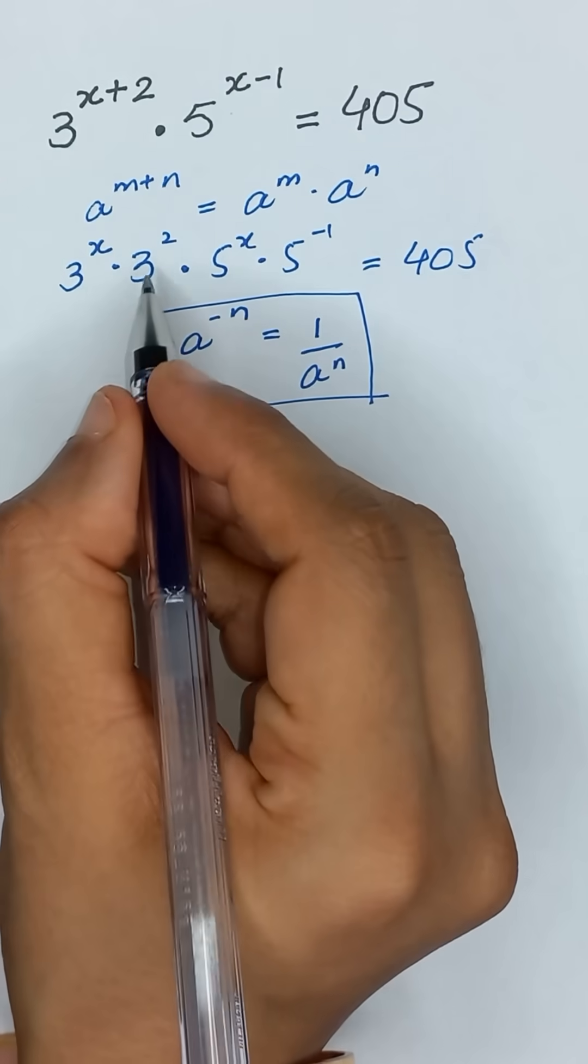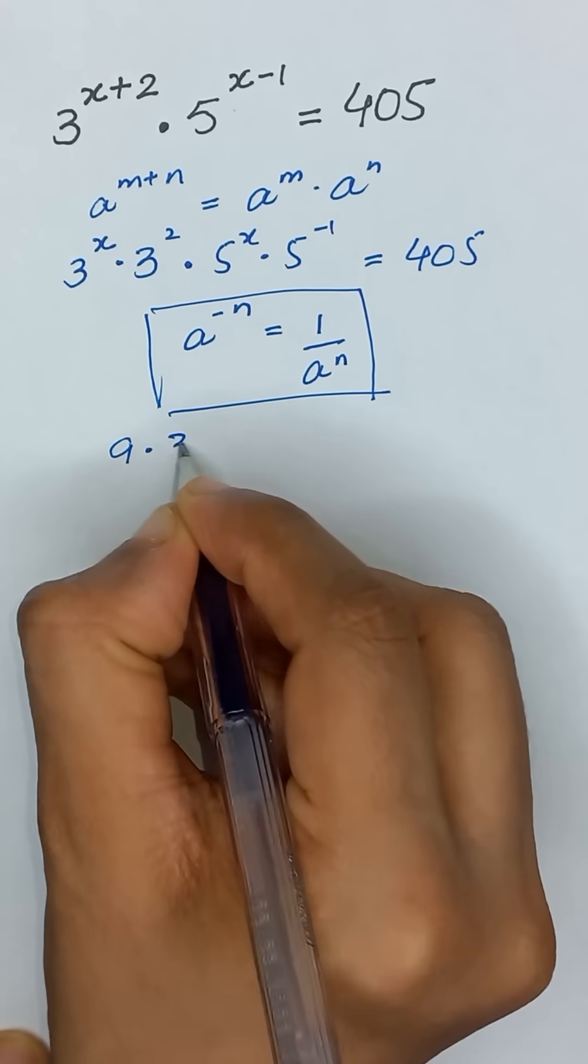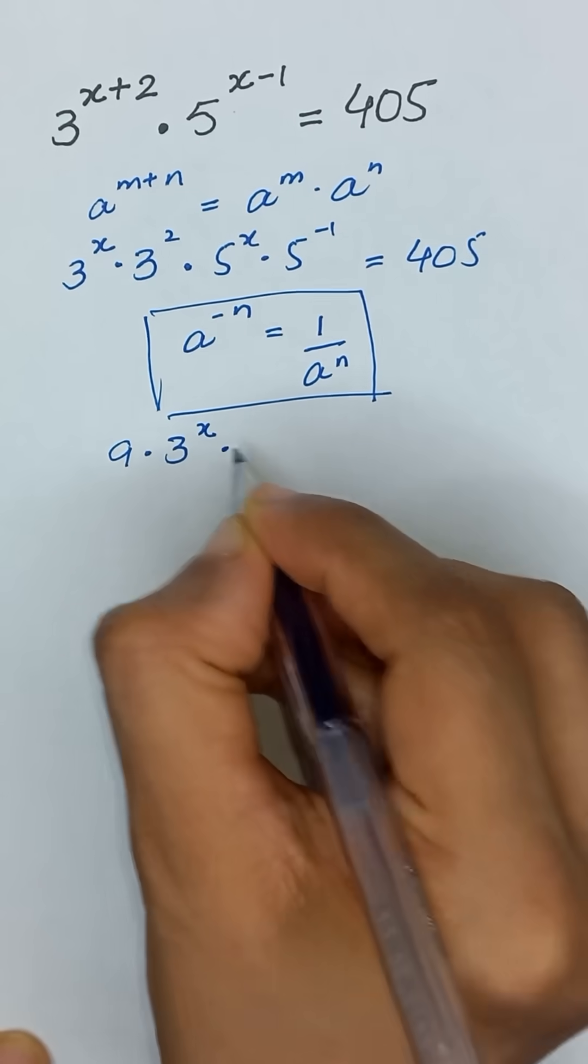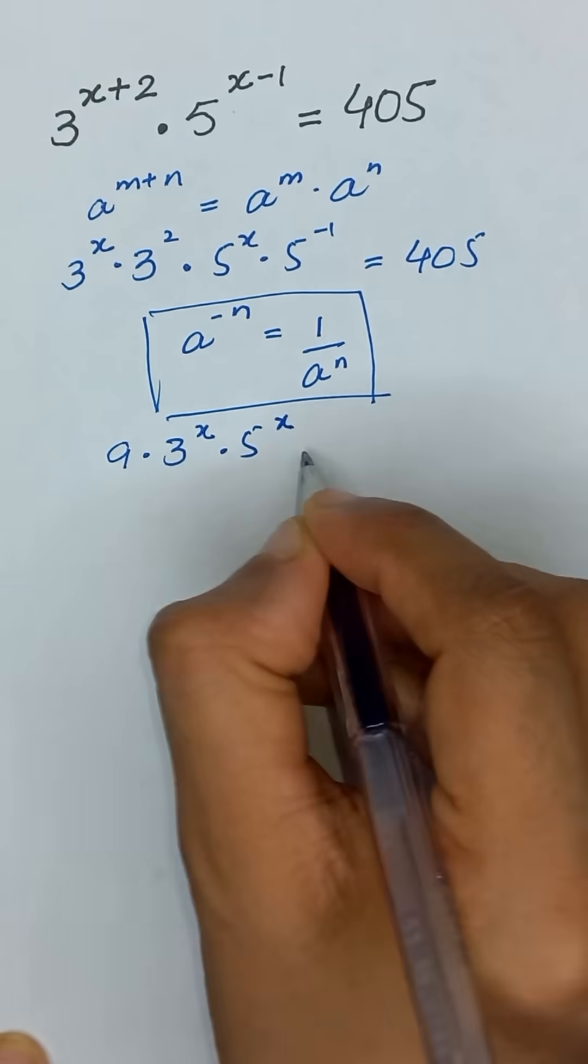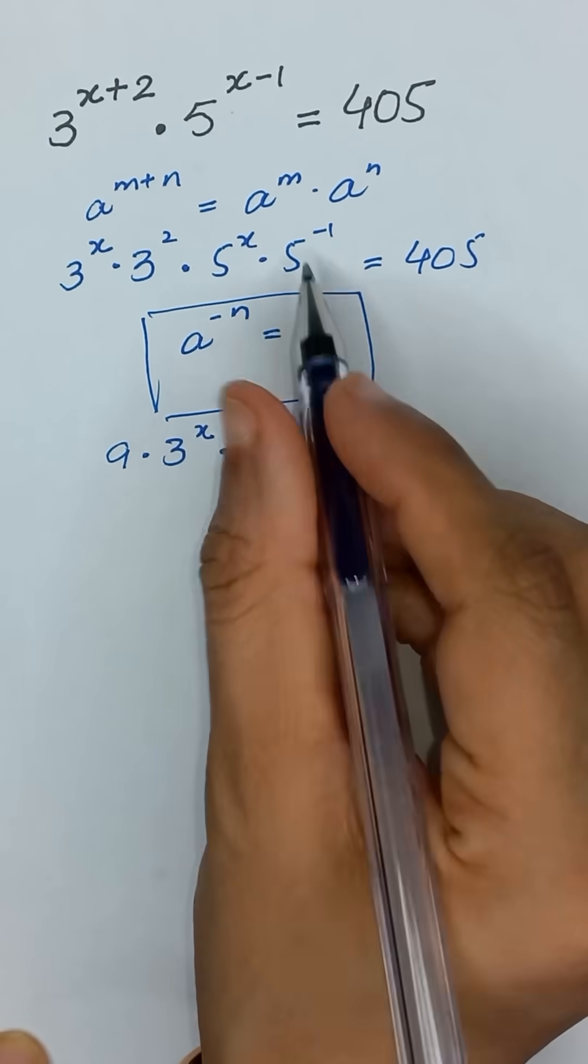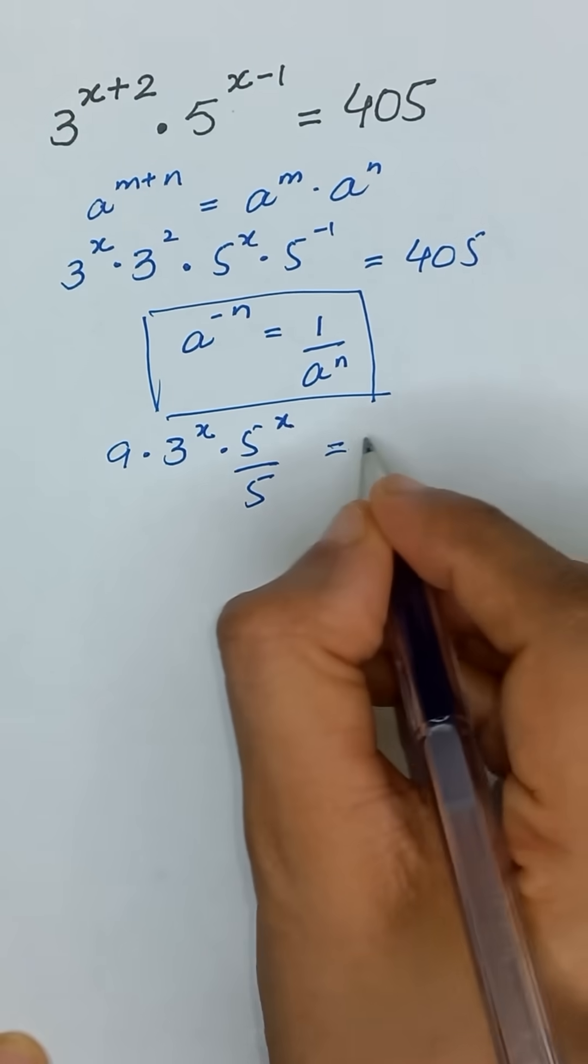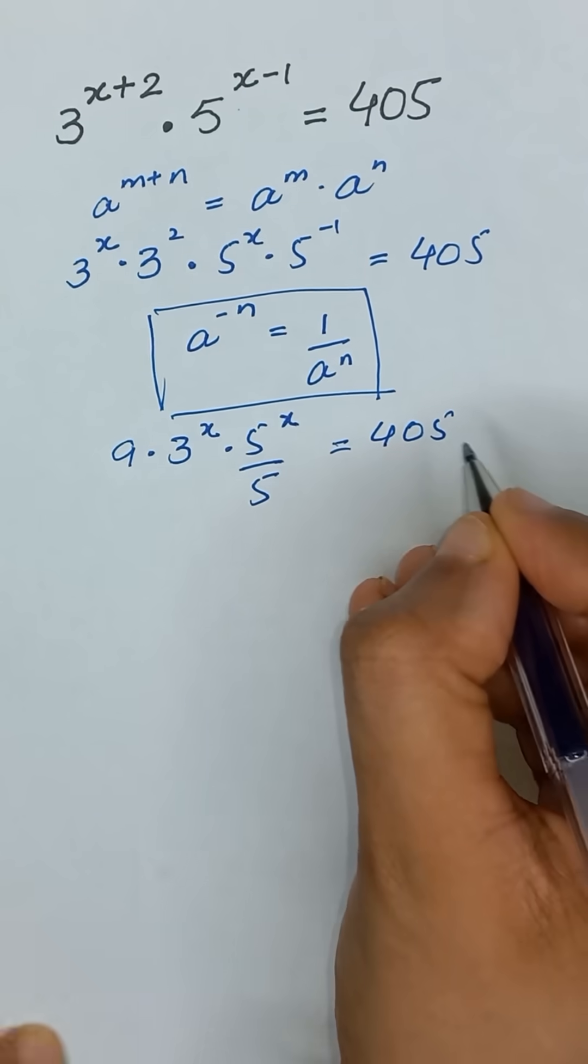So 3 squared will be 9. Therefore, 9 times 3 to the power x times 5 to the power x divided by 5 is equal to 405.